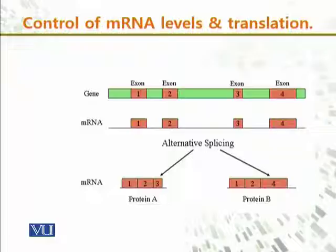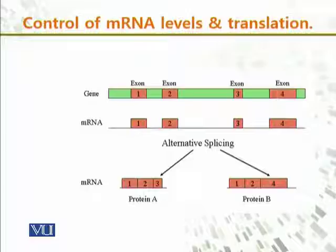For example, consider a gene with exons 1, 2, 3, and 4, producing a messenger RNA with exons 1, 2, 3, and 4. In alternate splicing, the messenger RNA for protein A may include exons 1, 2, and 3, while protein B may include exons 1, 2, and 4. With a large number of exons, you can imagine how complicated the picture becomes.